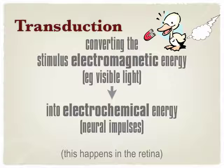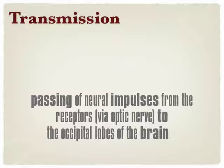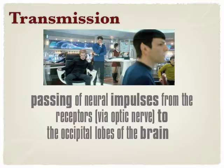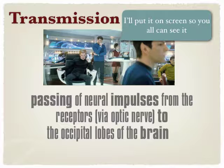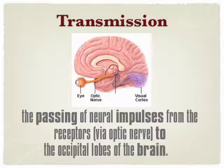We then have transmission, where it goes from the eye to the brain. Transmission is about passing neural impulses from the photoreceptors via the optic nerve to the occipital lobes of the brain. The photoreceptor passes it on so the rest of the system can make sense of it. Transmission moves from the eye via the optic nerve to the visual cortex.